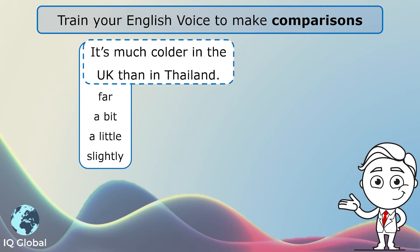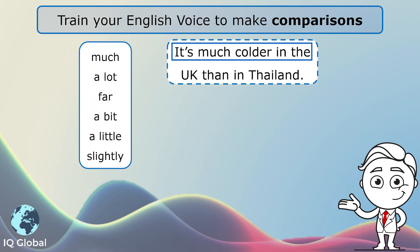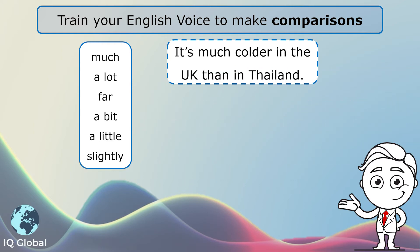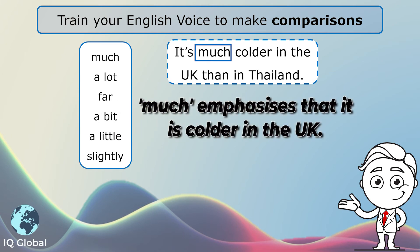So have a look at sentence one. It's much colder in the UK than in Thailand. So here we are comparing the weather in the UK to the weather in Thailand. The word 'than' tells us that it is a comparison. But instead of just saying it's colder in the UK than in Thailand, I want to put more emphasis in this sentence. So I use the word 'much' to emphasize that it is colder.